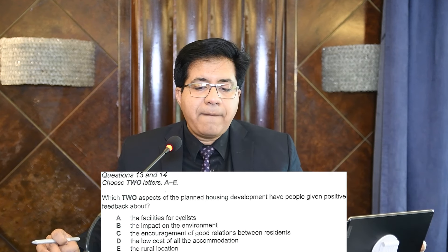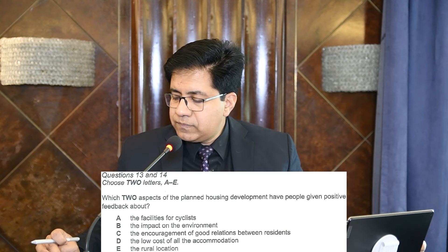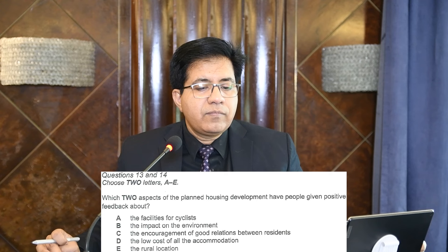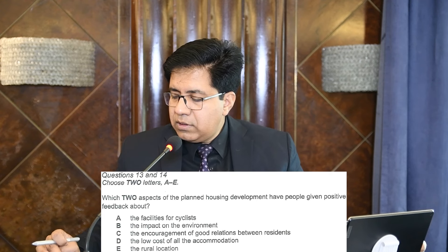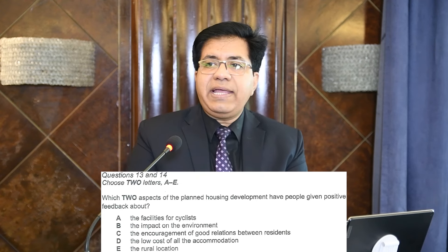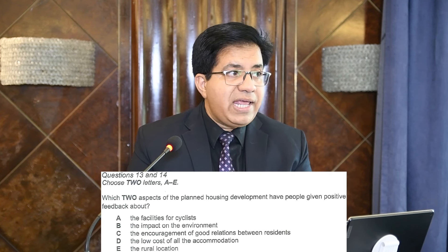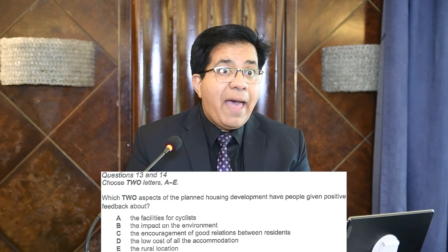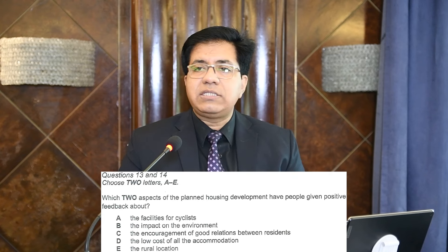'The overall feedback is that the design and facilities make it seem a place where people of all ages can live together happily.' Living together happily means good relations between residents — so option C is the second correct answer. On your answer sheet, you can write 13 B and 14 C, or 13 C and 14 B — both are correct. Try to follow the order of discussion — that's better practice.